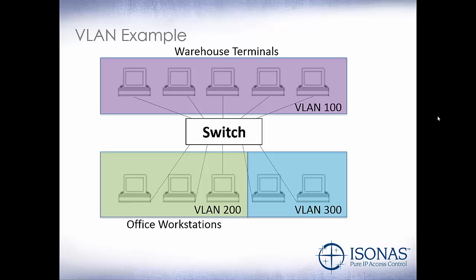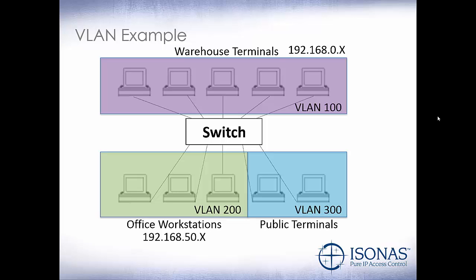Our green VLAN will be our office workstations. And because we love our employees, on their breaks and lunch hours we give them public terminals so they can access the internet — and again, we don't want that traffic on our regular network. So our purple VLAN, VLAN 100, may be 192.168.0. Our green VLAN may be 192.168.50, and our blue VLAN may be 192.168.100. In a basic reality, we would need a router to switch between all those different VLANs, though many intelligent layer 3 switches can do that communication between VLANs if you want.